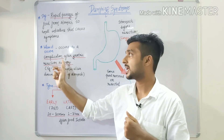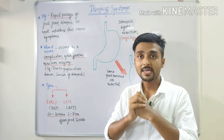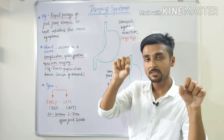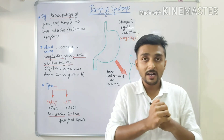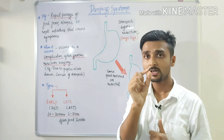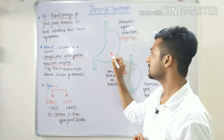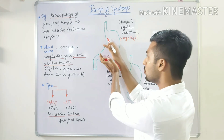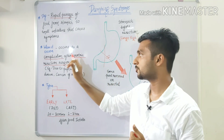Dumping syndrome is actually a complication of gastric resection surgery. This is a surgery where we remove some parts of the stomach and join the remaining parts together. We need to remove that part because of a disease condition — for example, peptic ulcer disease, where there is formation of sores and ulcers on the inner layer of the stomach. Because it cannot heal on its own, we remove the diseased portion of the stomach with the help of gastric resection surgery.